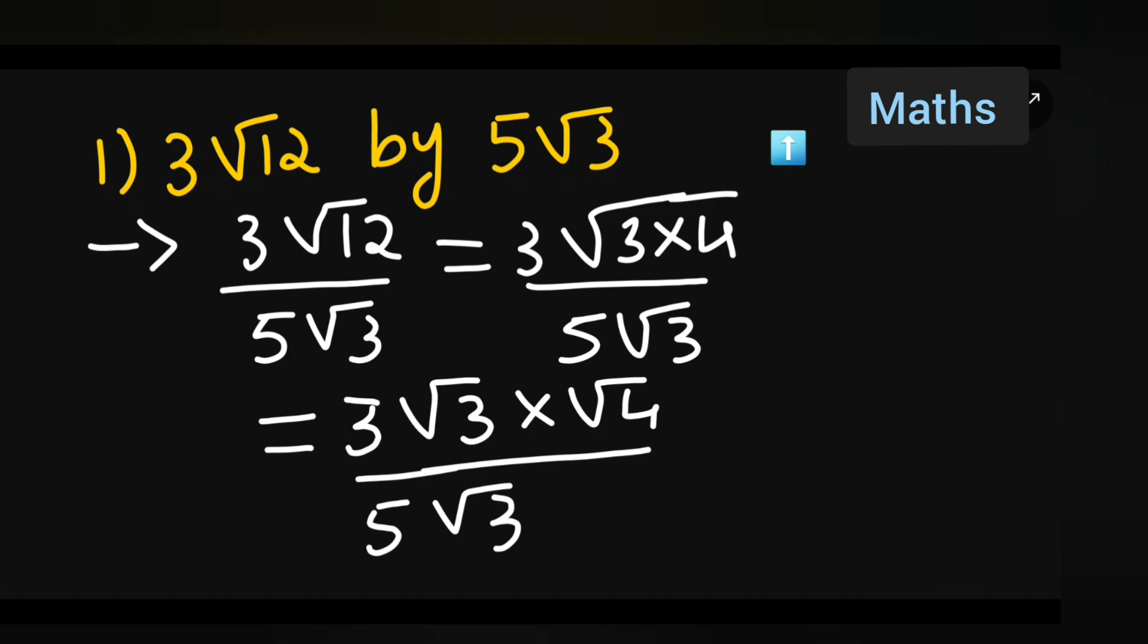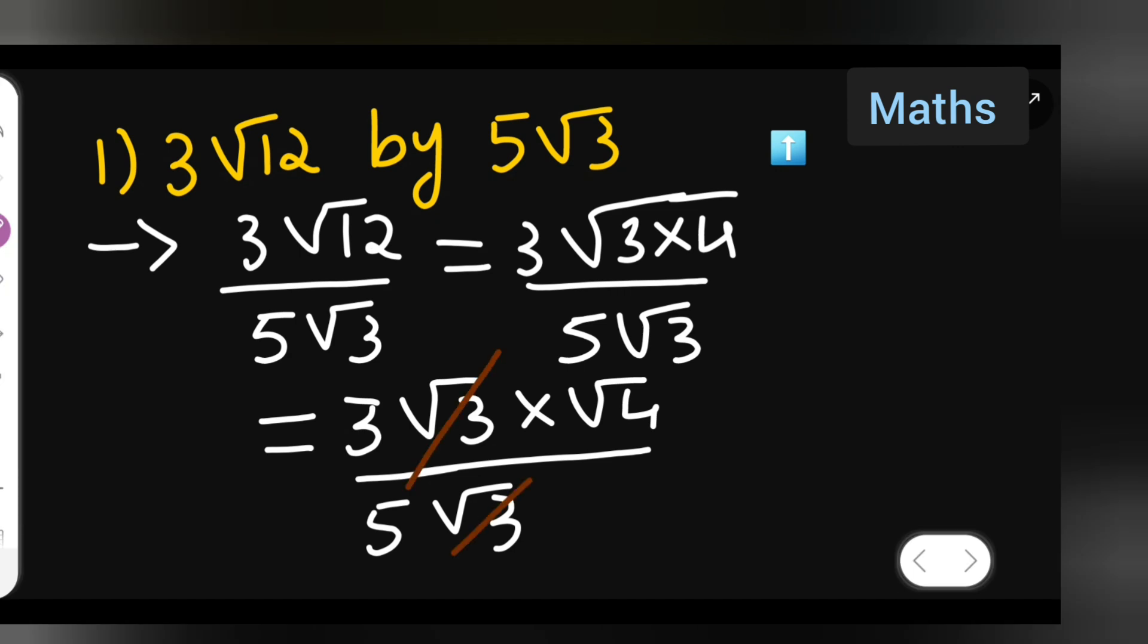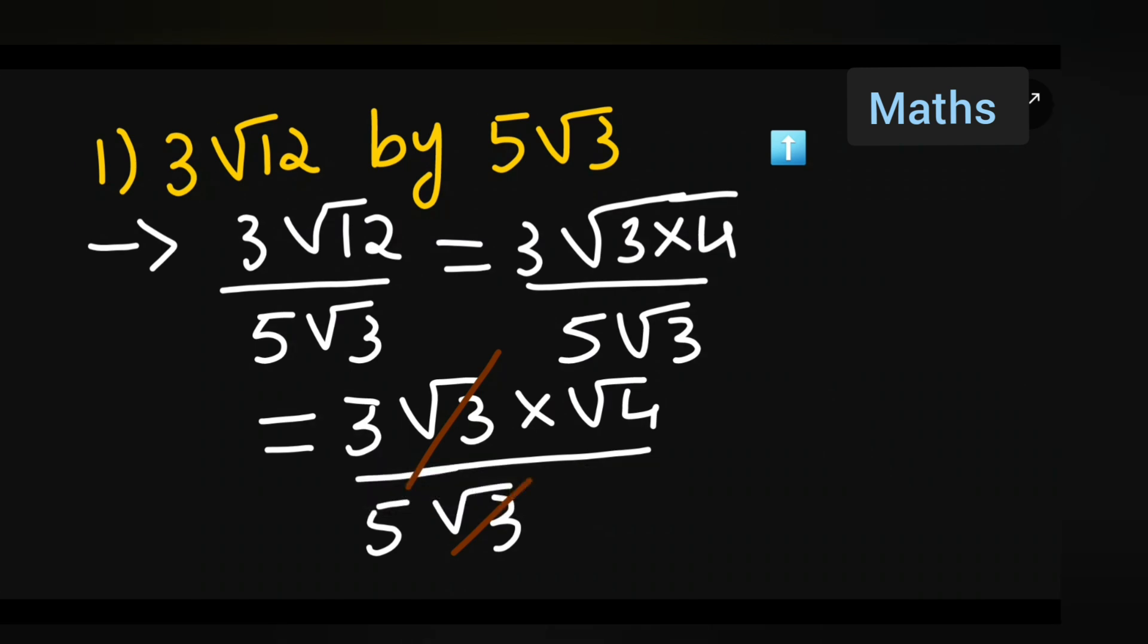So here 3, 3 will get cancelled. Root 3 will get cancelled. Well, I left with 3 upon 5 into √4.